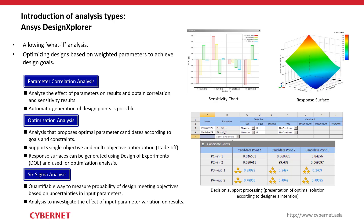After sensitivity analysis, you can move to optimization — setting goals and defining objectives using the parameters identified. Design Explorer supports both single-objective and multi-objective optimization. After running the optimization, you can evaluate your optimized design using response surfaces and embedded charts, and also run Six Sigma analysis available within Design Explorer.